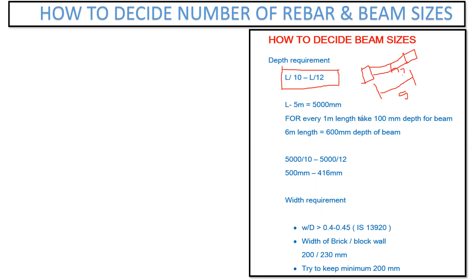So that general thumb formula you can use is: for every one meter of length, take 100 mm as a depth for the beam. That means what is the length we have? We have five meters. For every one meter if you take 100 mm as a depth, for five meters the depth will be 500 mm. Similarly, if I have a length of six meters, then the depth of my beam will be 600 mm.